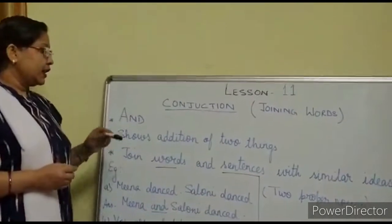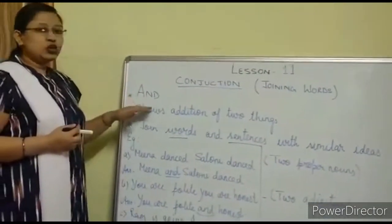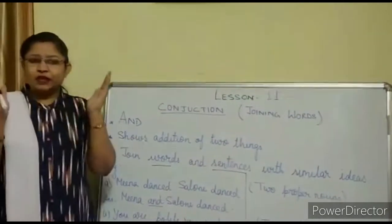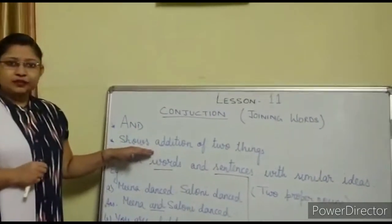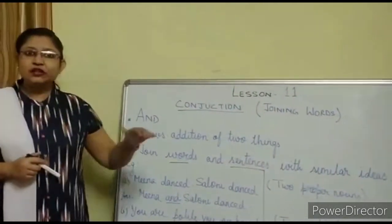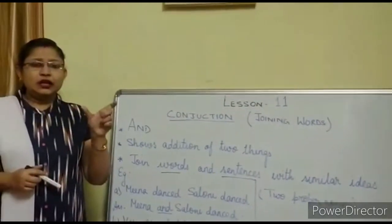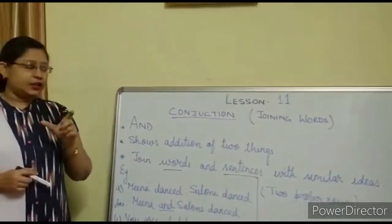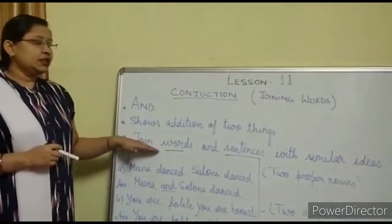Where do we place 'and'? And shows addition of two things — that means joining of two things. When we are joining two things, we always use the conjunction 'and.' It joins words and sentences with a similar idea. When both sentences have the same idea with no contradictions, we use 'and.' And the next point is joining of two sentences with similar ideas.